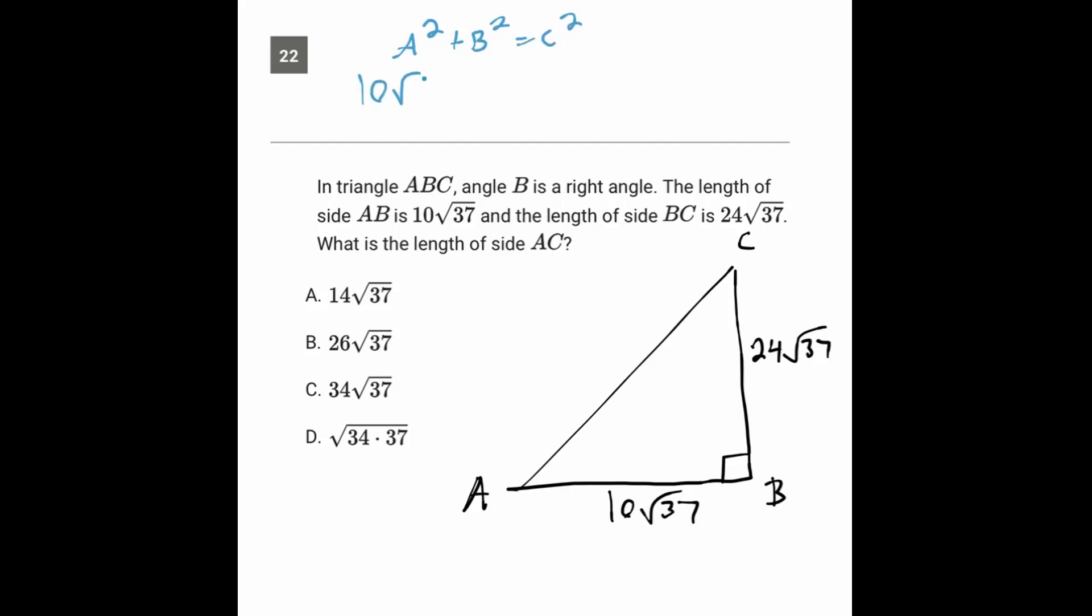So (10√37)² + (24√37)² = C². Squaring the 10√37: 10 times 10 is 100, and √37 times √37 is just 37. Let me make this neater.